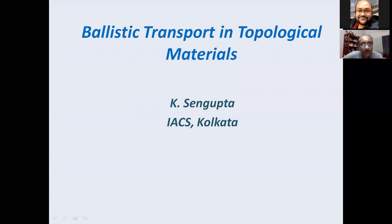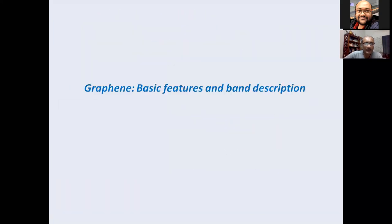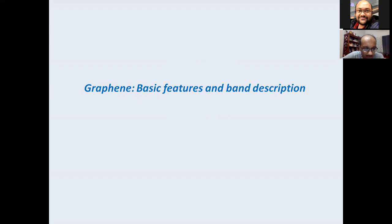Let me start with the most famous of them all: graphene. This is one of the earliest known topological materials, discovered around 2004, where Dirac-like physics was found at low energies.